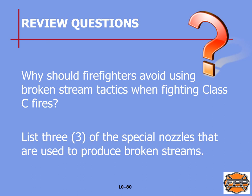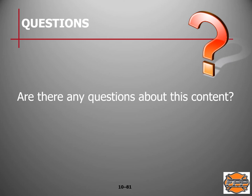Review questions: Why should firefighters avoid using broken stream tactics when fighting Class C fires — page 244 of your manual. List three of the special nozzles used to produce broken streams — page 245 of your manual. Thank you as always for your attention. If you need further explanation or any other assistance, be sure to contact your instructor. This chapter is pretty straightforward, but do contact your instructor if you have any questions. We will meet again for Chapter 11.